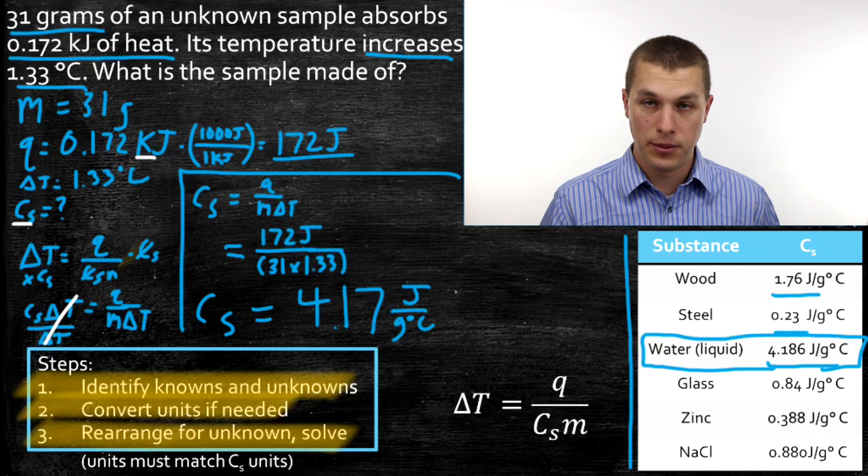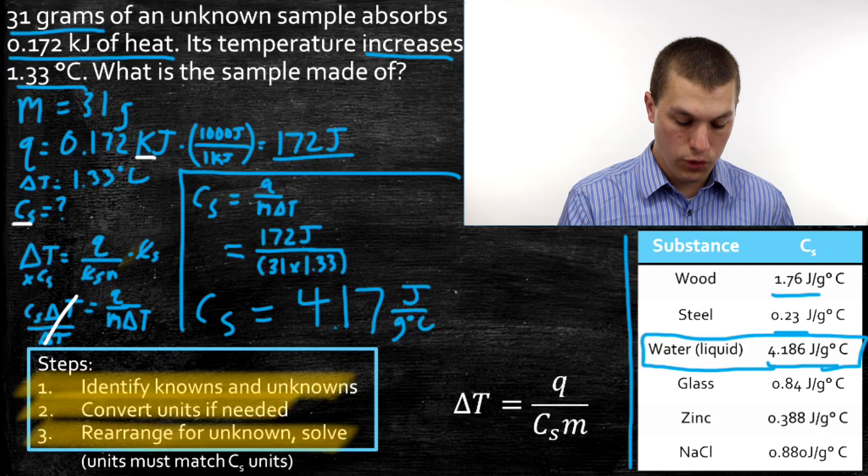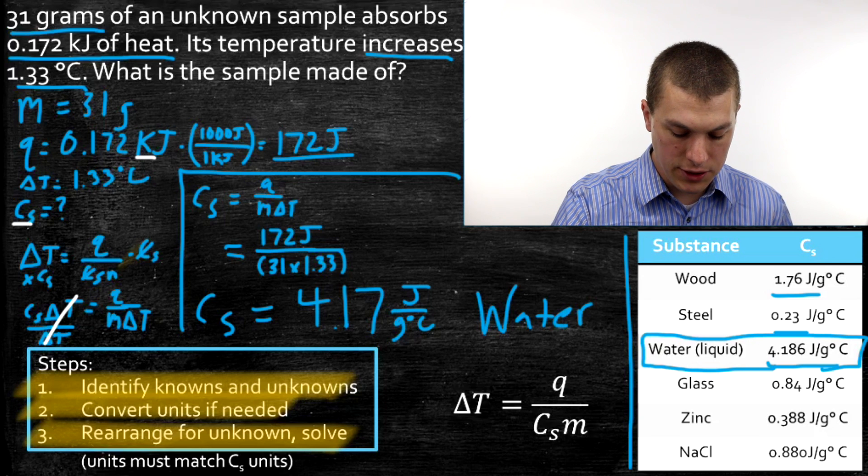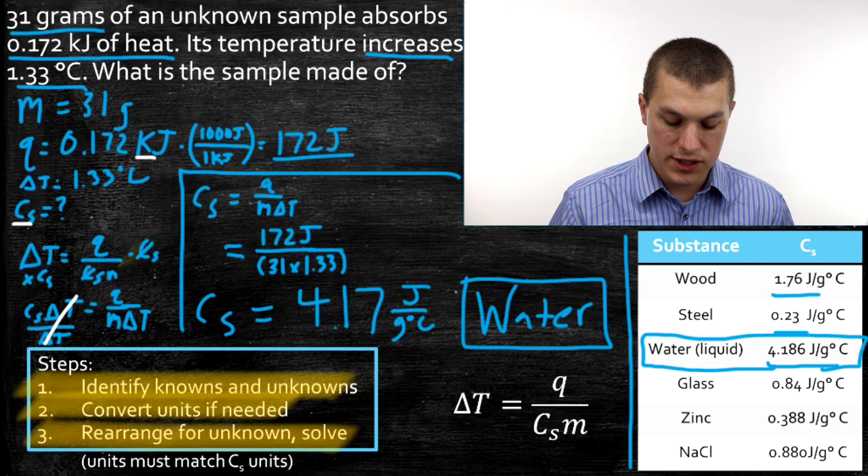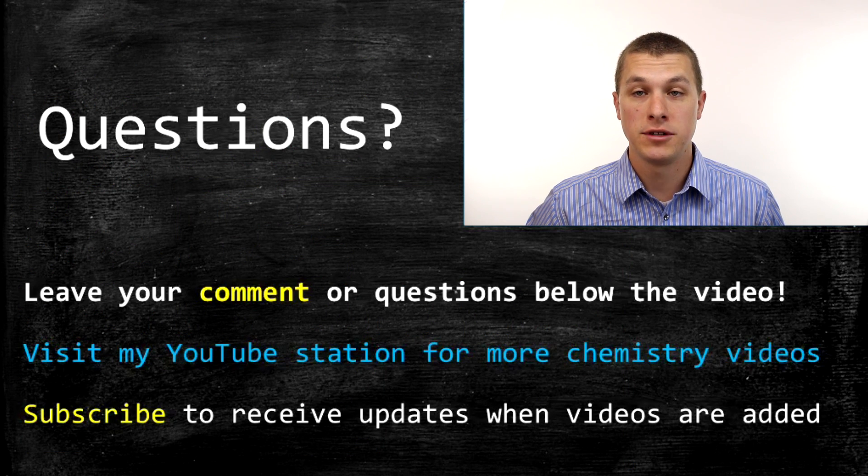This is how you identify materials based on heat capacity. You go and look in that table for what the value is. So this turns out to be water. That's how we can identify materials. We calculate the heat capacity, and we identify it on our table. So this guy is made of water.